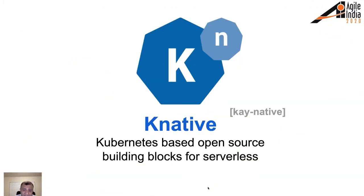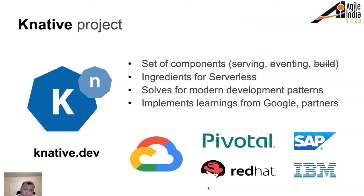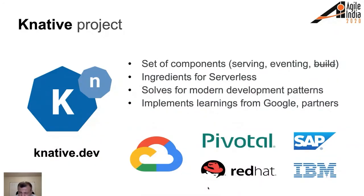Knative is a completely open source project that provides all the building blocks for serverless — a Kubernetes-based serverless programming model. Primarily, Knative has two components: serving and eventing. Early versions prior to 0.8 had three components — serving, eventing, and build. Build has since been deprecated and moved to its own project called Tekton. Knative was developed by a consortium of leading companies including Google, Pivotal, Red Hat, and SAP. The website is knative.dev.